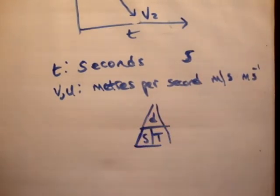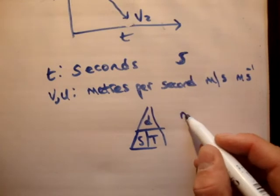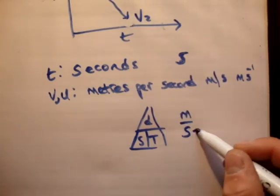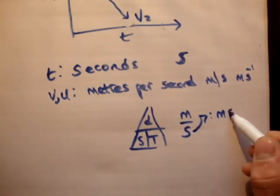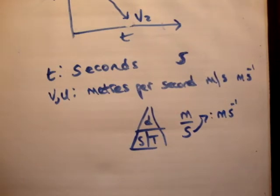That's the same thing. And also, if you know your rules of indices, you have m over s is the same as m s to the minus 1.